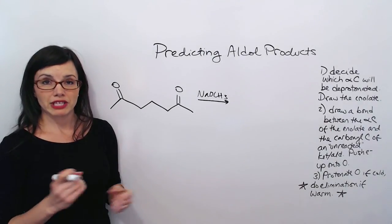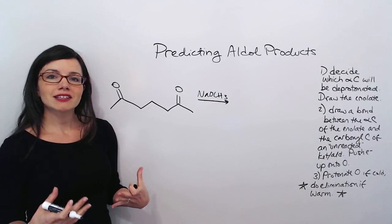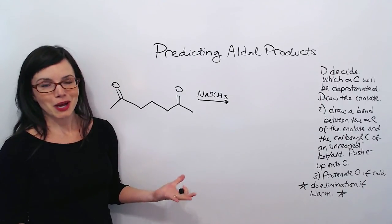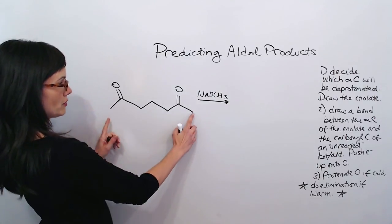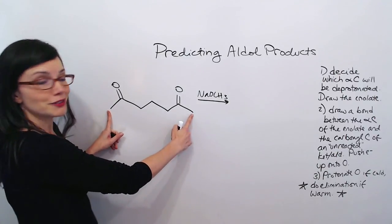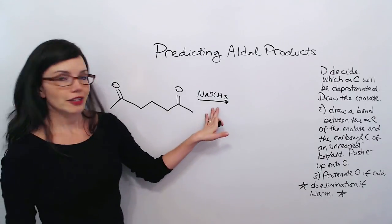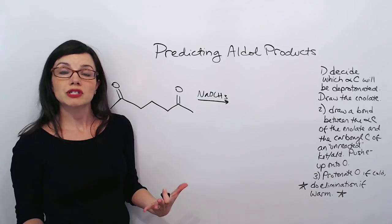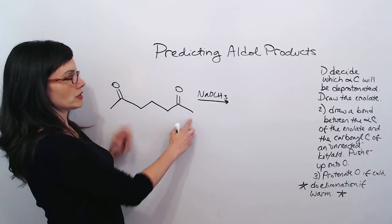Here's another example of an intramolecular aldol. In here, we have to think a little bit harder about our first step. Because, again, our first step is to decide which carbon is going to be the alpha. We can choose one of these, which are identical. Or one of these, which are identical. And here we have a methoxide base, which indicates we would choose a more substituted alpha carbon. One of these interior ones, rather than the exterior ones.